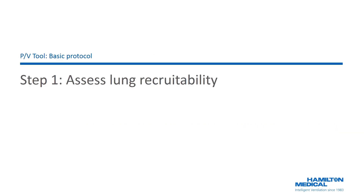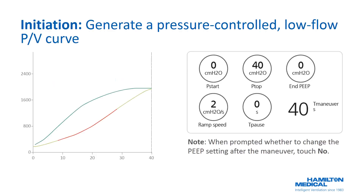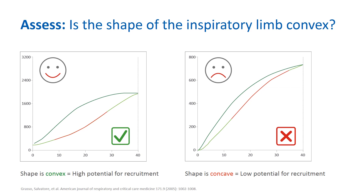Step 1 requires an assessment of lung recruitability. We recommend to start and end with zero PEEP to picture the whole PV loop, giving us the opportunity to detect the necessary landmarks identifying the potential for successful recruitment. In the case of high potential for recruitment, we will recruit the lungs anyway. If there is a low potential for recruitment, we tend to set a low PEEP because these patients will not benefit from a high PEEP strategy. Once the diagnostic curve is generated, we will assess the shape of the inspiratory limb. In the first phase of the inflation limb, shown in light green, we are working only with properties of the baby lung. Reaching the opening pressure, we get an improved pressure-volume relationship because we are gaining volume due to alveolar recruitment.